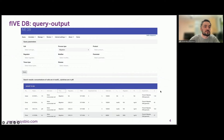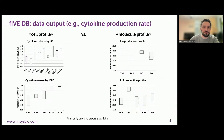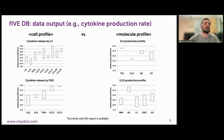The search result can be downloaded in CSV format. Currently, parameters and process data can be exported in CSV format, but we are testing the output in different formats, like something you can see in this slide — for example, cytokine production.